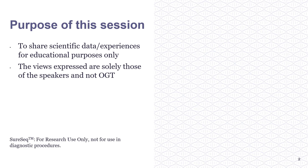NGS offers us the opportunity to identify both copy number changes and SNVs with a CNV limit of detection that could be higher in NGS than in FISH. This presentation will review the results of a proof of concept analysis to determine the CNV limit of detection using the OGT SureSeq CLL plus CNV NGS analysis.